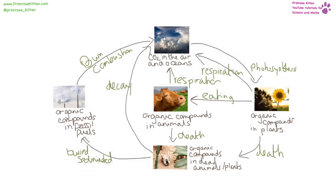So carbon isn't a static thing — it is constantly moving around from carbon dioxide in the air to carbon compounds in animals, plants, and dead animals, and then being incorporated into fossil fuels which can then be burnt and put the carbon dioxide back in the air. This is a very, very complicated, involved process that happens over millions of years, and you need to know all of these steps.